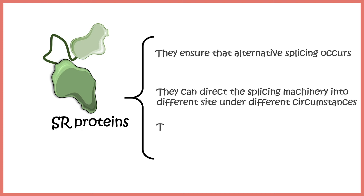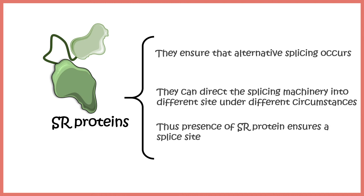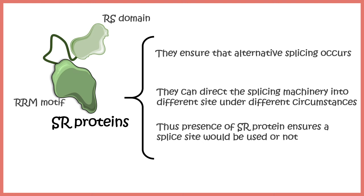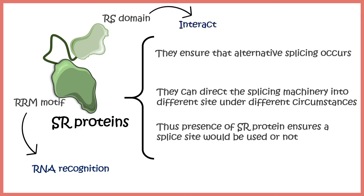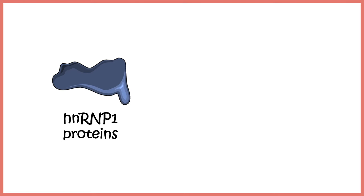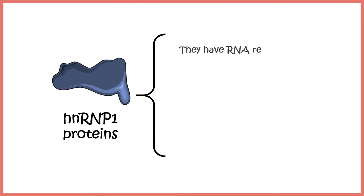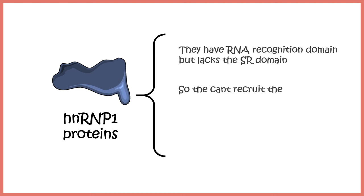SR proteins have two domains: the RRM motif (RNA Recognition Motif), which binds to the mRNA, and the RS domain, which interacts with the splicing machinery. The presence or absence of SR proteins determines whether a splice site is used. Another class of proteins, hnRNP1, are examples of splicing repressors — they have an RRM domain but lack an RS domain, so they cannot interact with activators and instead sequester on the RNA, preventing the splicing machinery from being recruited properly.